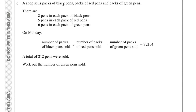Question 6 says a shop sells packs of black pens, red pens, and green pens. There are 2 pens per pack of black, 5 pens per pack of red, and 6 pens per pack of green. On Monday, the ratio of packs of black to red to green sold was 7 to 3 to 4, and a total of 212 pens were sold. Work out the number of green pens sold. So there are 212 pens sold and we need the number of green pens.